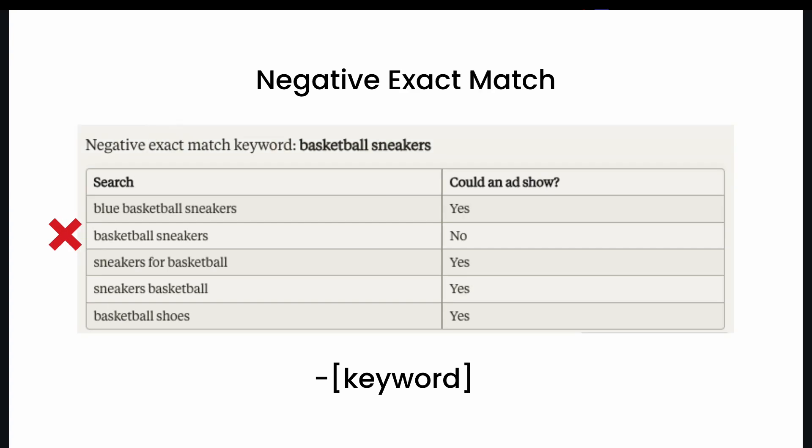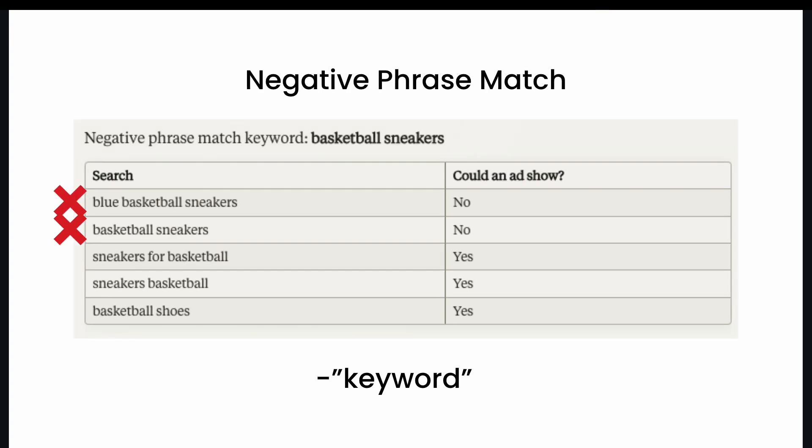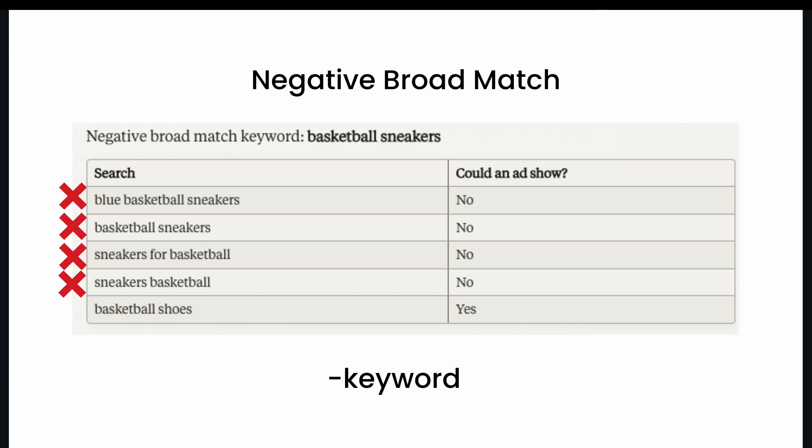In summary, there are three match types for adding negative keywords to your account. With negative exact match, you only prevent the search term from triggering your ad if it exactly matches the negative keyword you input. With negative phrase match, your ad won't show if the search contains the exact keyword terms in the same order — additional words can appear, but the root words must be present. With negative broad match, your ad won't show if the search contains all of your negative keyword terms, even in a different order. If you want to block the most search terms, use negative broad match. For more restrictive blocking, use negative phrase match. To remove one specific search query, use negative exact match.